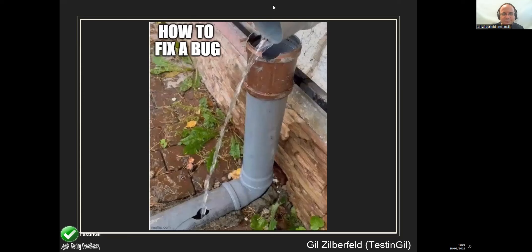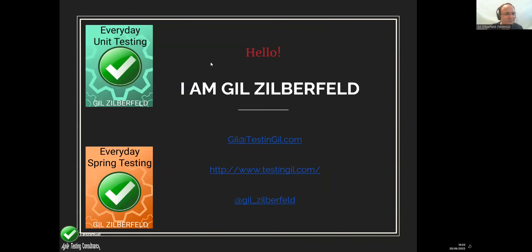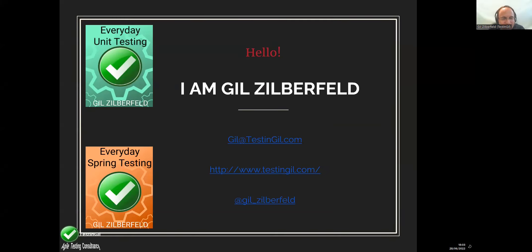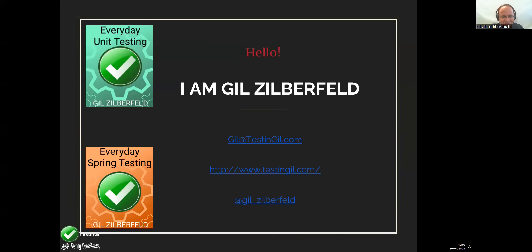So let's see — who am I? My name is Gil. I'm a trainer and consultant and I work with developers, testers, and everyone involved in software development who wants to create better software. I'm the author of two books: Everyday Unit Testing and Everyday Spring Testing. Some of the things we're going to talk about today involves automated tests, which is not a surprise.